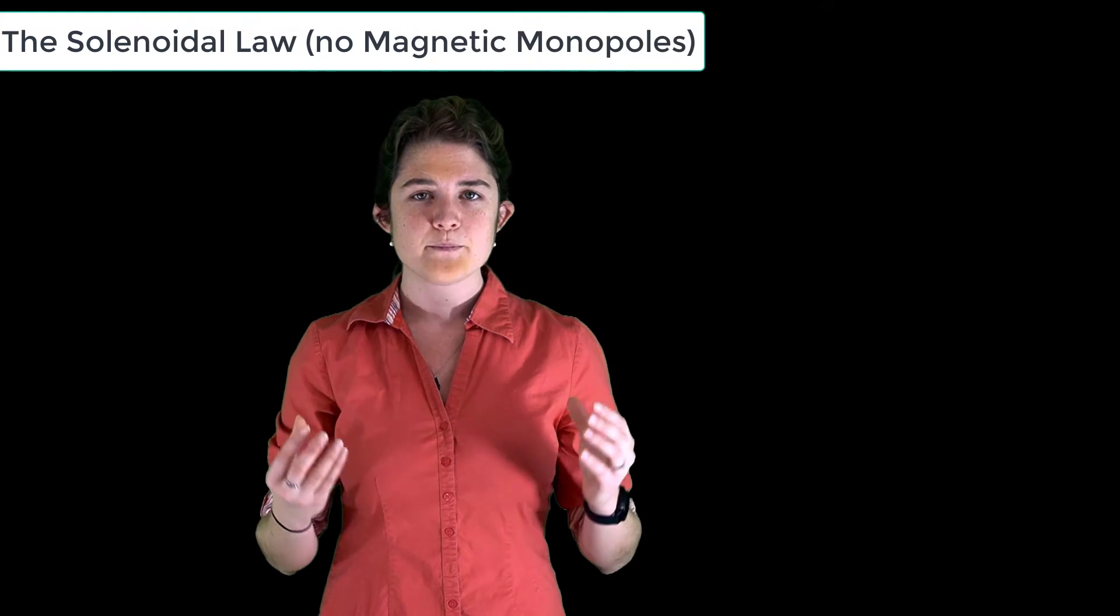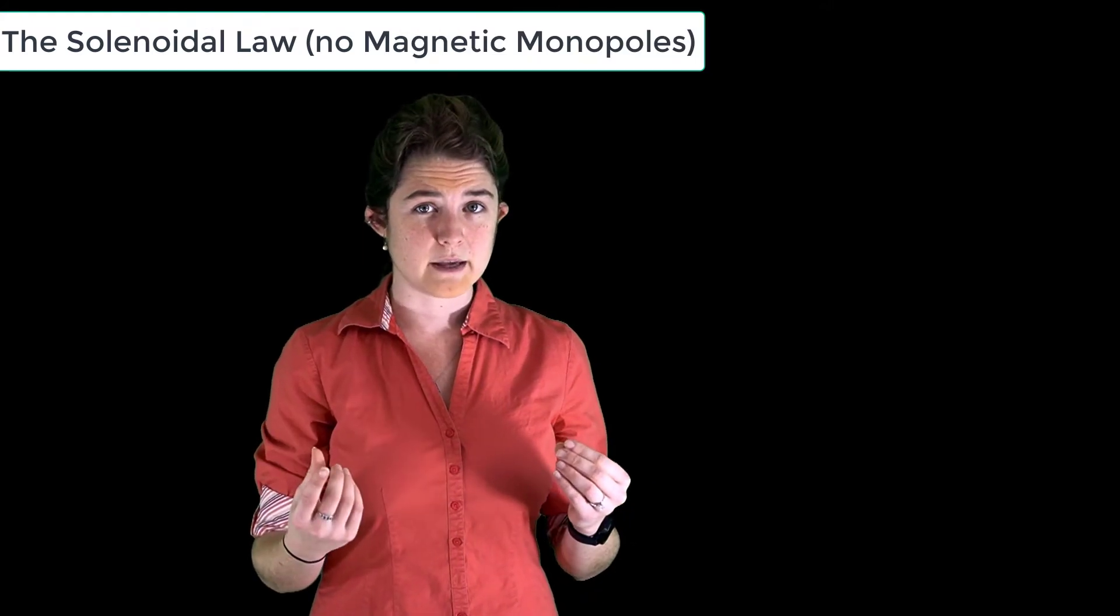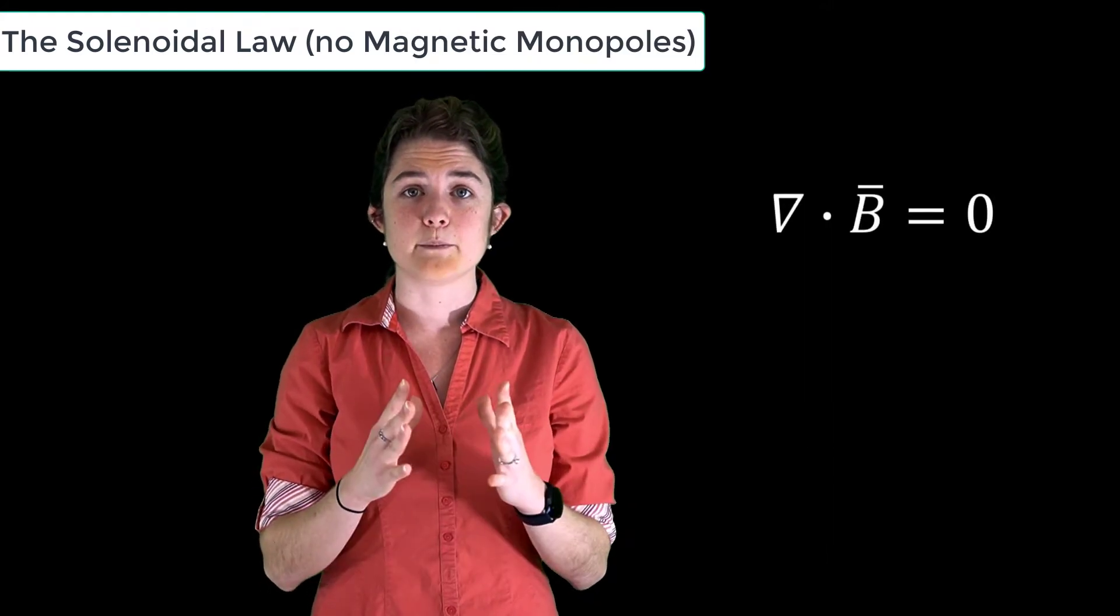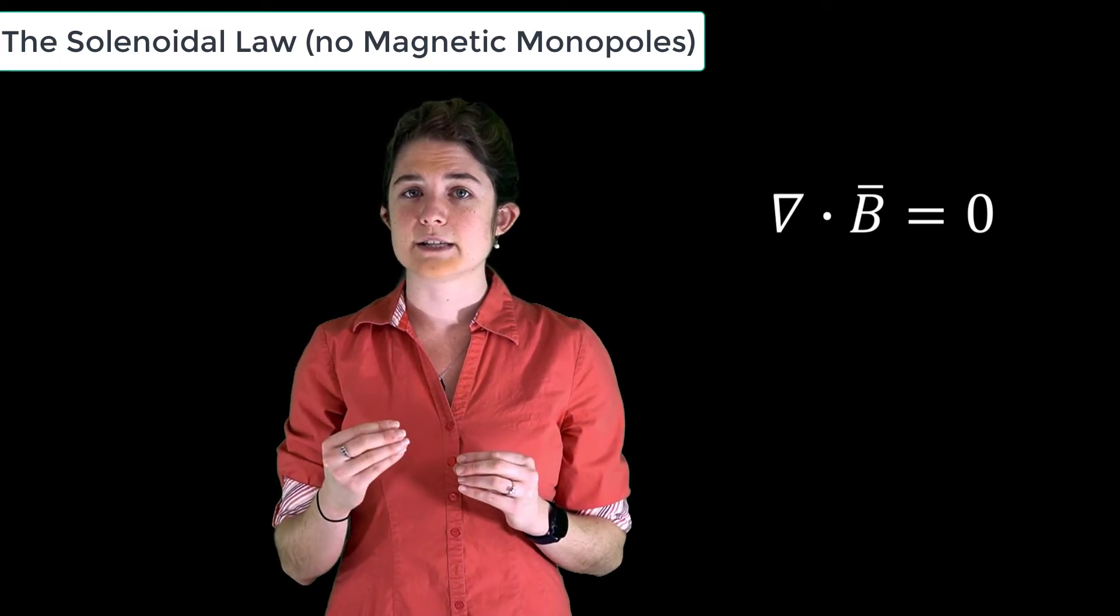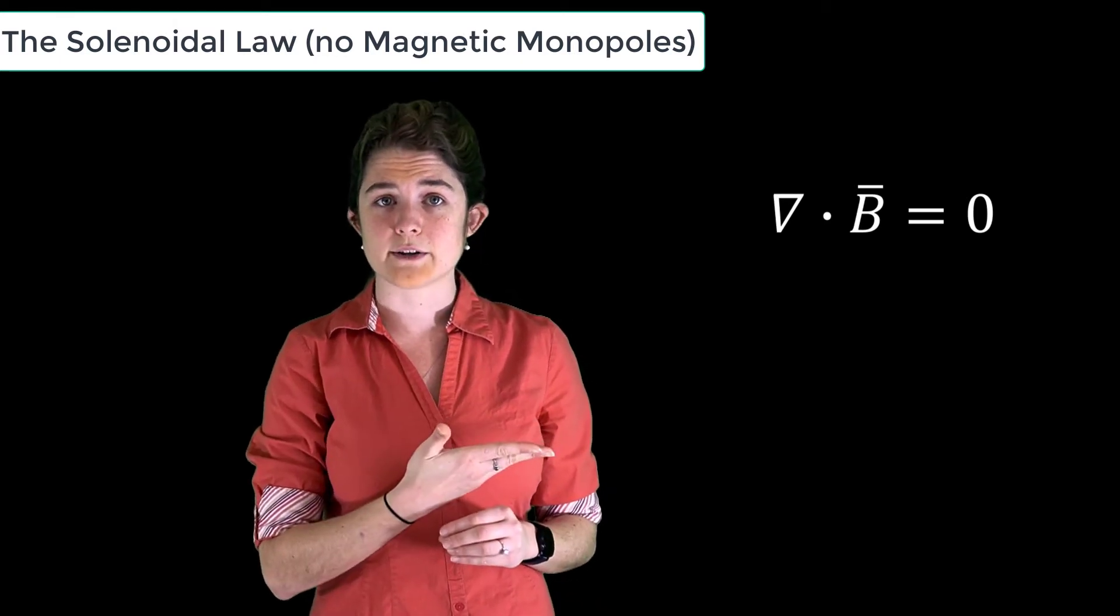So when we say that magnetic fields always form loops, what we're saying mathematically speaking is that the divergence of the B field is always zero. And the fact that its divergence is zero is known as the solenoidal law.